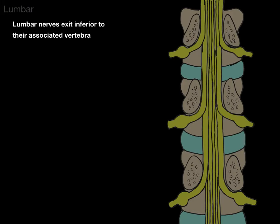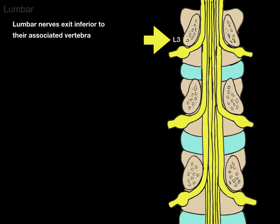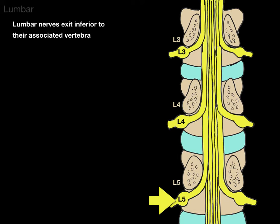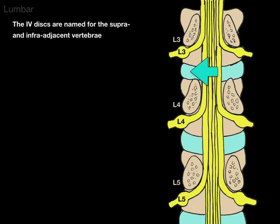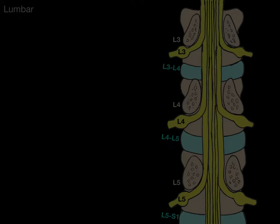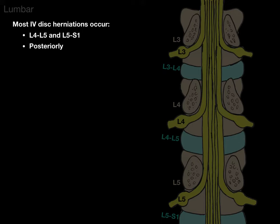Lumbar nerves exit inferior to their associated vertebra. So there's L3 vertebra, L3 nerve; L4 vertebra, L4 nerve; L5, L5. The intervertebral discs are named for the supra and infra adjacent vertebrae, just like the entire vertebral column. So between L3 and L4 vertebrae is the L3-L4 intervertebral disc; L4-L5; L5-S1, and so on. Most intervertebral disc herniations in the lumbar region occur between L4-L5 and L5-S1, and most herniate posteriorly.